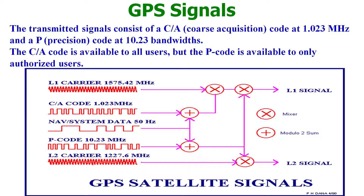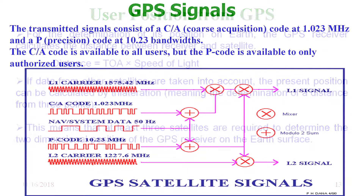GPS signals include 5 components: L1 carrier, C/A code, NAVSTAR data, P code, and L2. These are all combined and make 2 important signals — L1 and L2 — which we use for positioning and atmospheric studies.